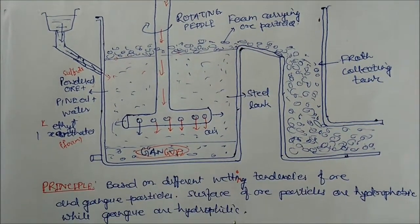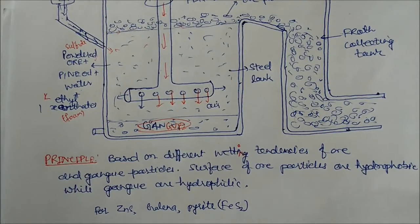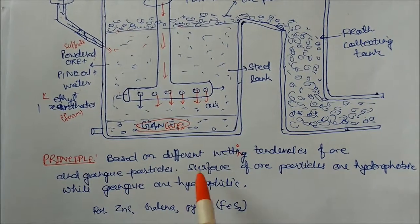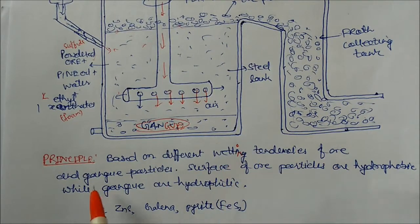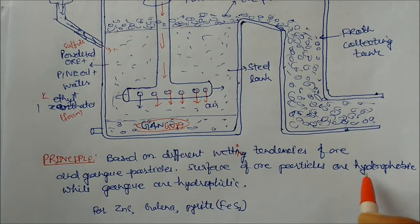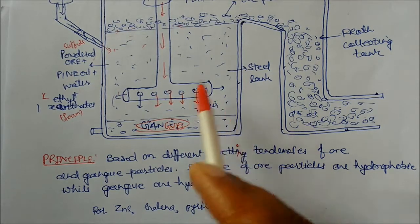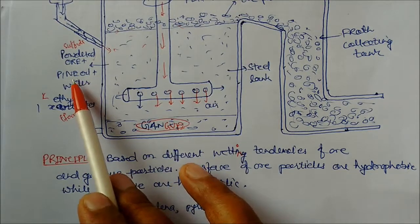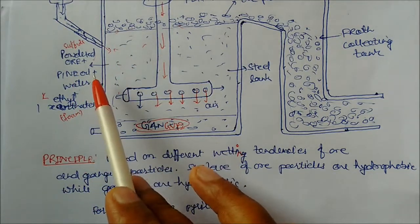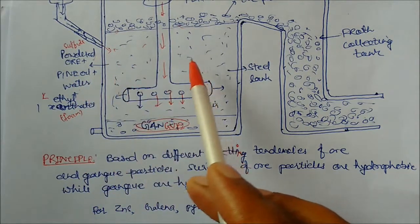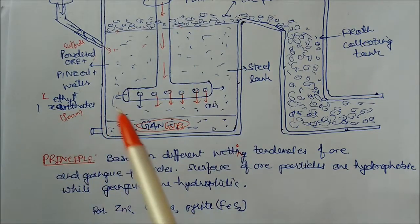The basic principle behind the froth flotation process is that it is based on the different wetting tendency of ore and gangue particles. The surface of ore particles is hydrophobic while gangue particles are hydrophilic. Examples include zinc sulfide, galena, and pyrite (FeS2). Only sulfide ores are attracted towards pine oil due to their hydrophobic nature, while water attaches to the other impurities, and in this way both are separated out.